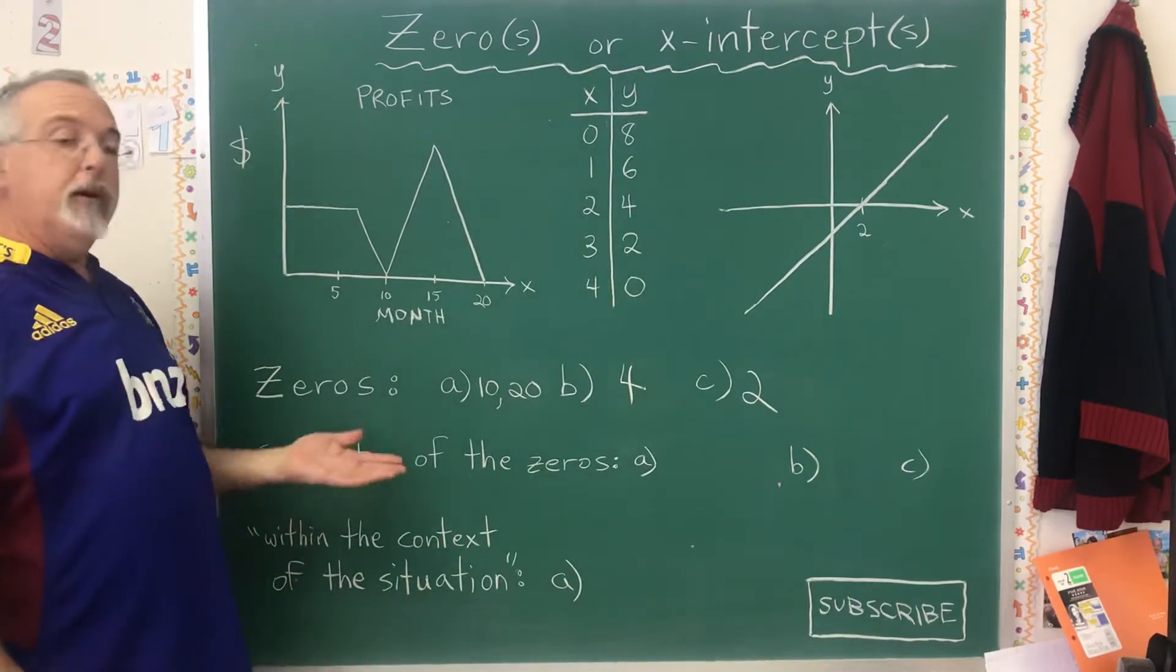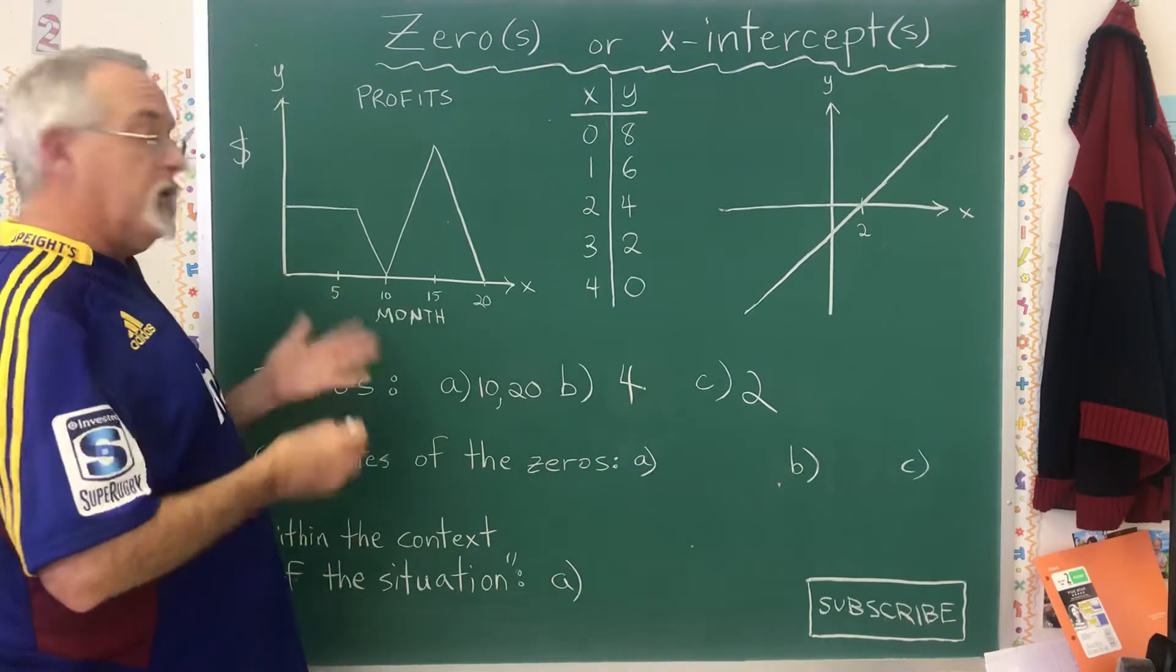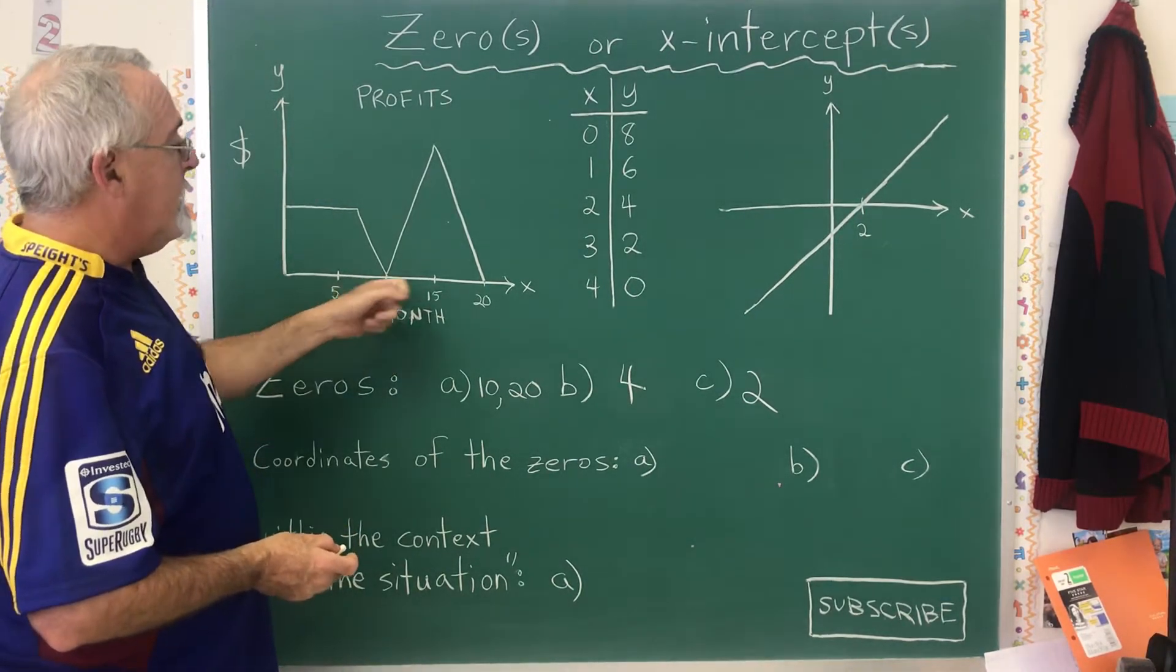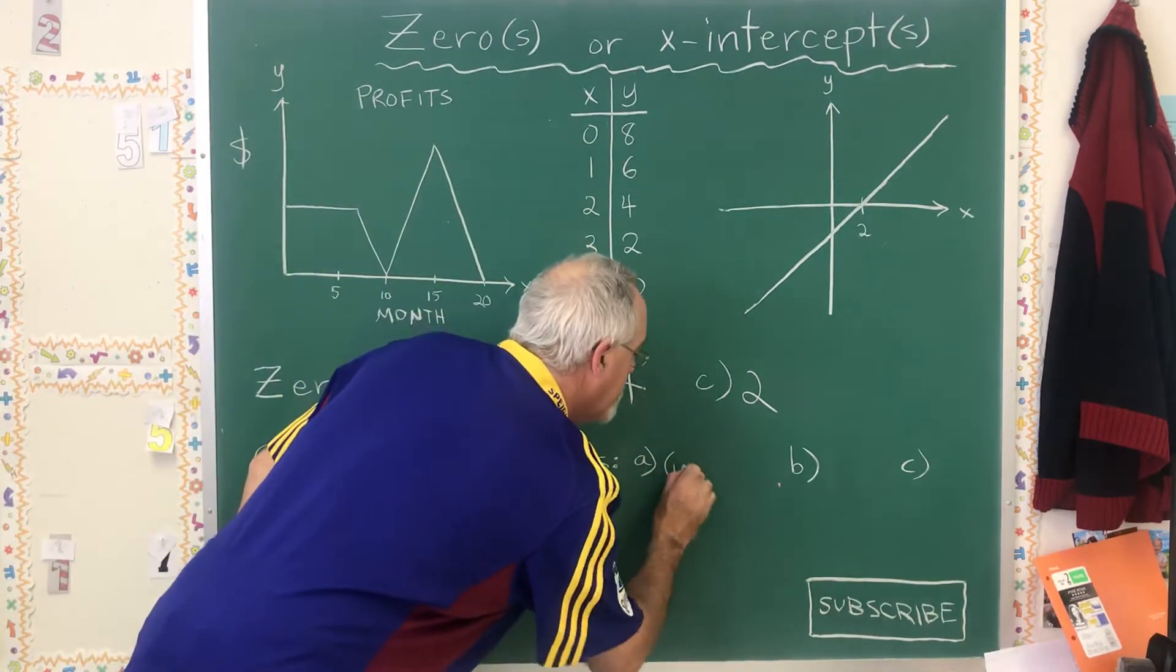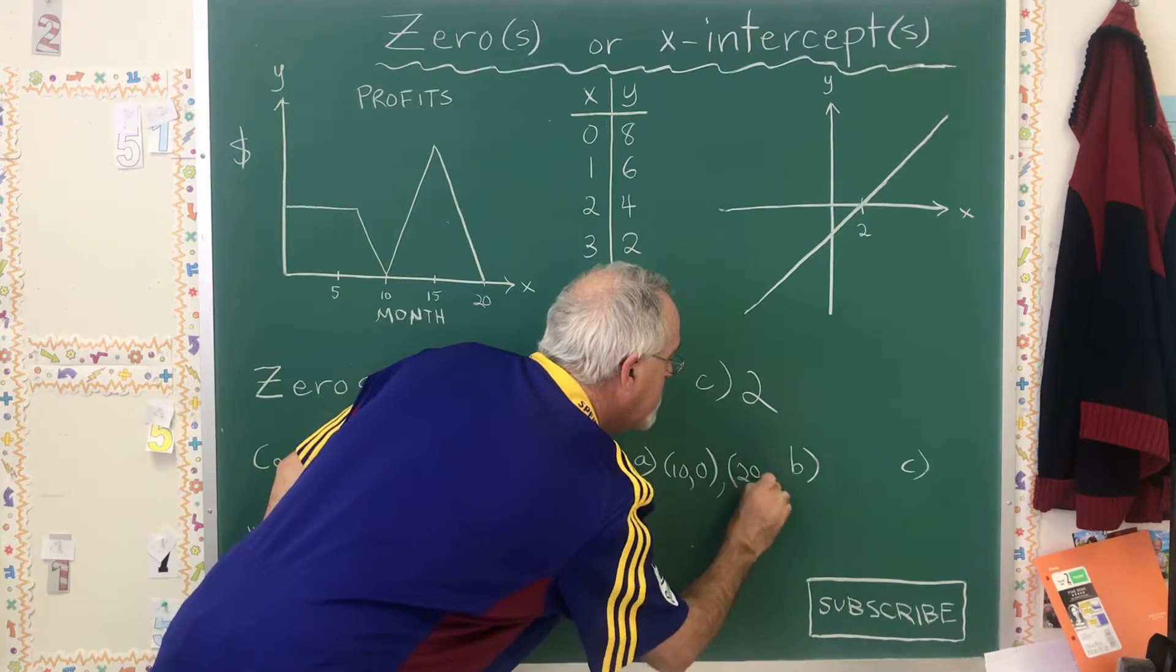We could also be asked instead for the coordinates of the zeros. In this case, we have to give the coordinate pair. So in this situation, 10 and 20, the answers are going to be 10, 0 and 20, 0.